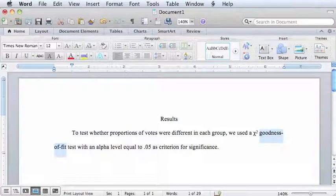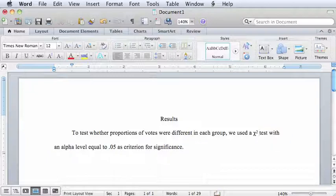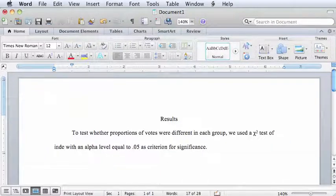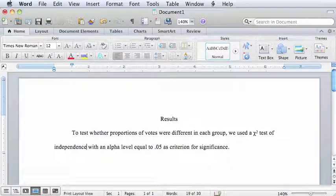Because this is a test of a relationship between two variables, we must specify that it is a Chi-squared test of independence, as opposed to a test of goodness of fit, which examines only one variable's distribution.